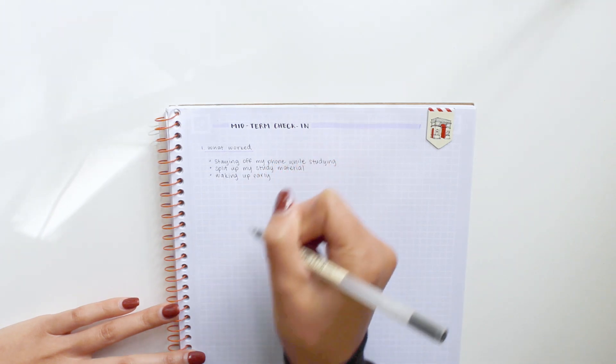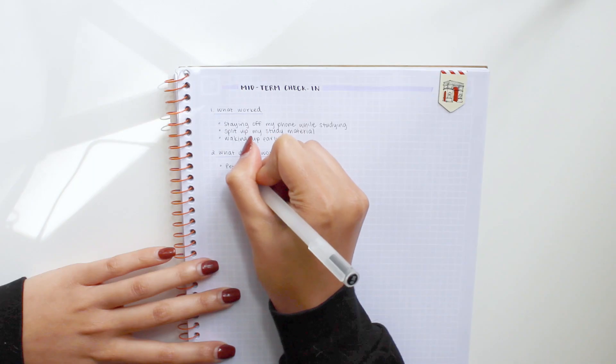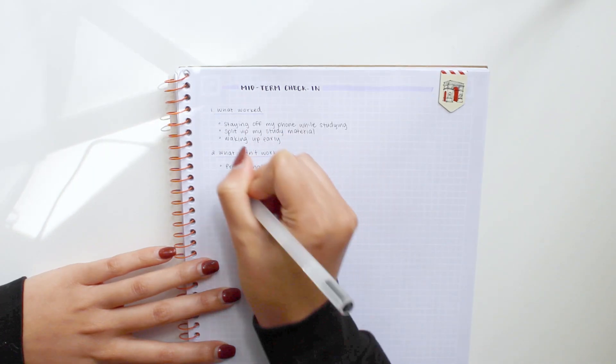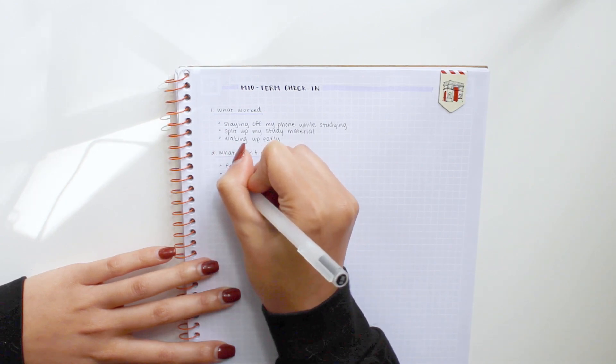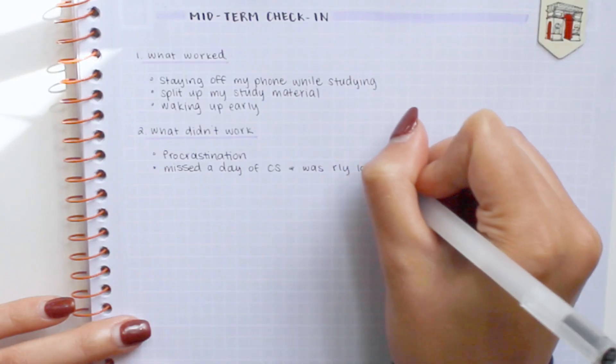And then what wasn't working for me this semester was the fact that I would constantly put stuff off until the last second. Another thing is I've only missed one day of my computer science class so far, but I was super lost the next day, so I'm going to try and not miss any more of those classes.